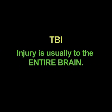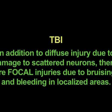In a traumatic brain injury, the injury usually occurs to the entire brain — it can be diffuse and global. In addition to the diffuse injury, you can have damage to scattered neurons, and there are also focal injuries due to bruising and bleeding in localized areas.